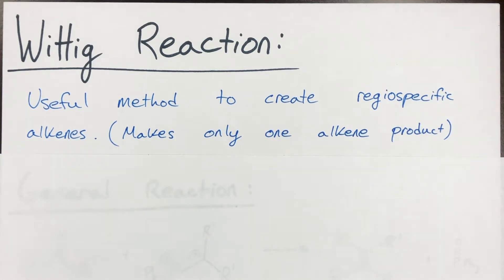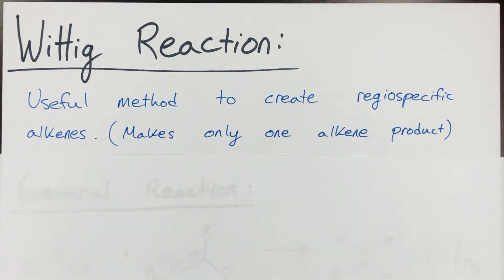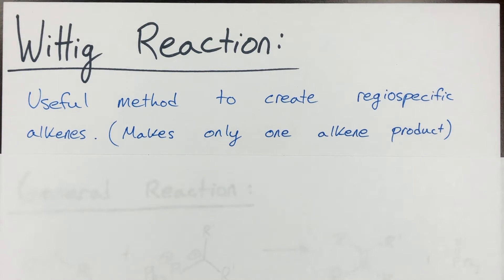The bond connectivity is always defined. This is very useful because other ways to make alkenes, like eliminations with E1 and E2, usually make multiple products. So the Wittig reaction is a way to get around that — you make unambiguously one product with this method.